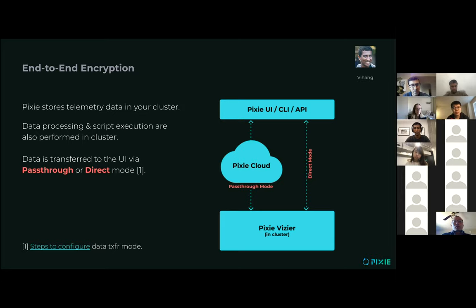When the Pixie client — let's say you're running the UI, or maybe you're using the Pixie CLI — when the client needs some data to render, what happens is the client sends the script to the cluster, and then all of the data processing is done in the cluster, and then the script results are sent back to the client.